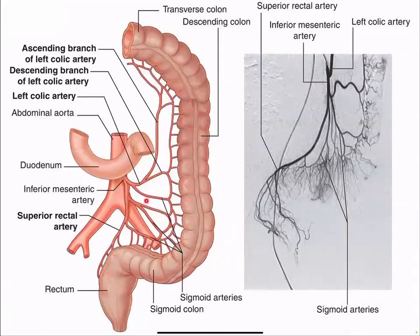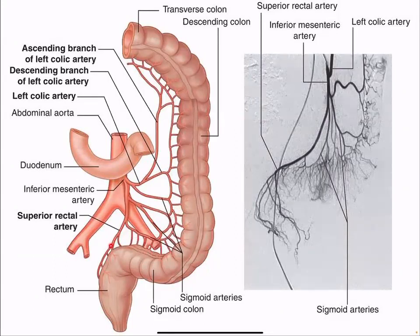The inferior mesenteric artery gives rise to the left colic artery, which gives rise to the ascending and descending branches of the left colic artery, the sigmoid branches (sigmoid arteries), and the superior rectal artery. An angiogram also reveals these divisions.